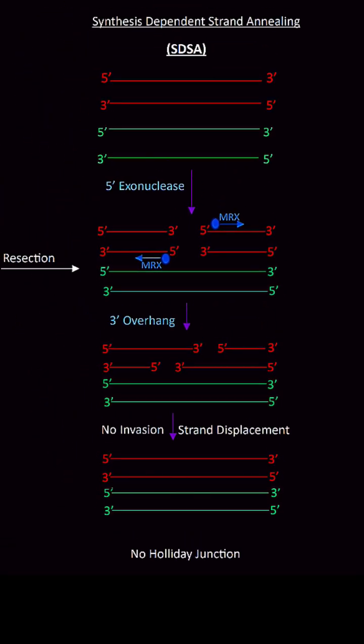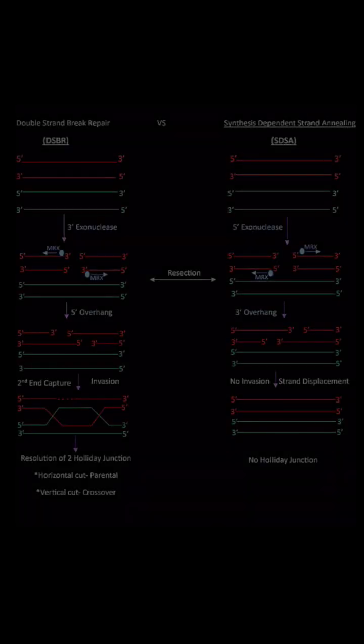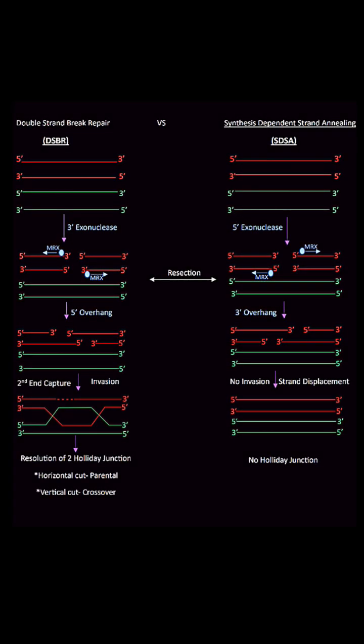The products are 100% parental. In DSBR, there is high probability of formation of 3' overhang.